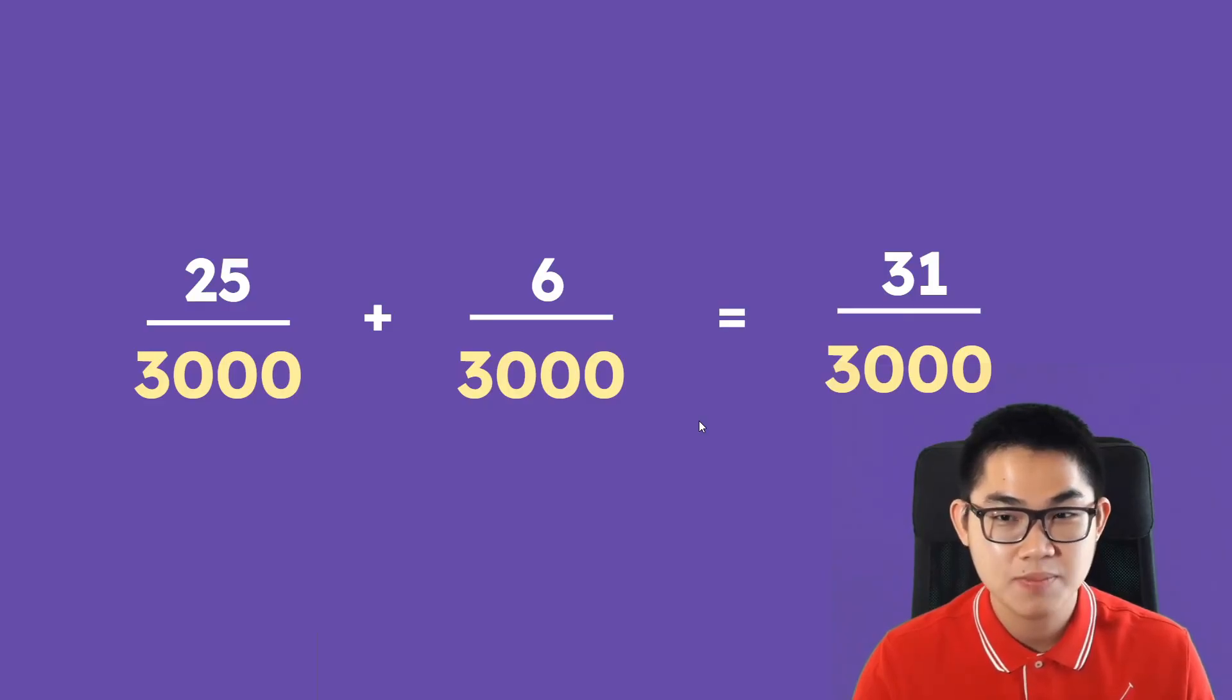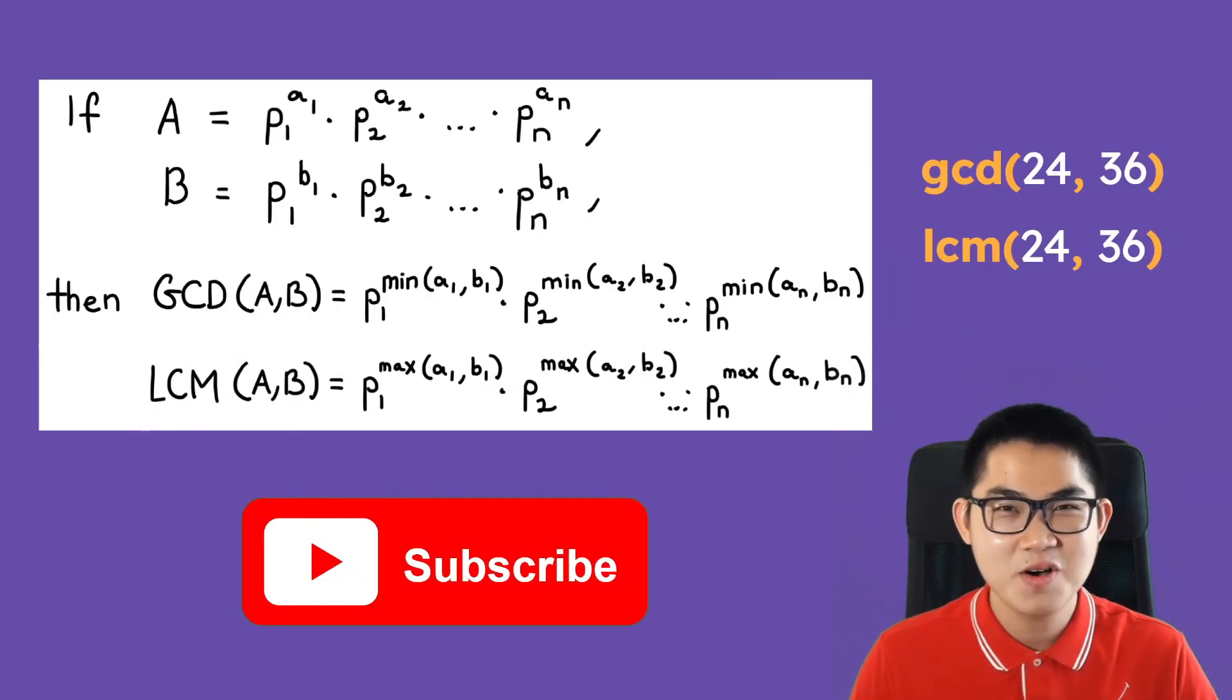So I'm going to put the general formula at the top left corner. So this is everything that we just went through and why don't you go ahead and find the GCD of 24 and 36 as well as the LCM and let me know what are your answers in the comment section below.